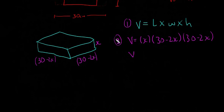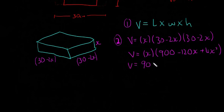Okay, so I'm going to work that out. Let's make sure that's a 2 actually as well. V is equal to, so I'm going to leave the X to the last. It's going to be 900 minus 120X plus 4X squared. And then V is equal to 900X minus 120X squared plus 4X cubed. Okay, this is step two. Now we have our volume in terms of X.